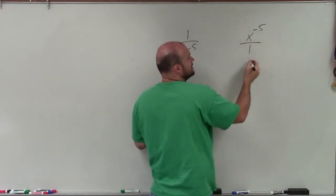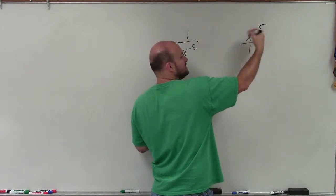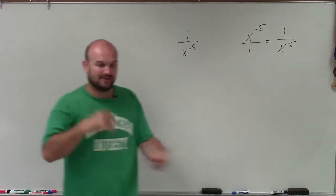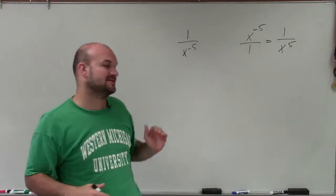What we said is, if we have a negative exponent in the numerator to write it as positive, then we just write it under the 1, right? From the numerator, it goes down to the denominator.